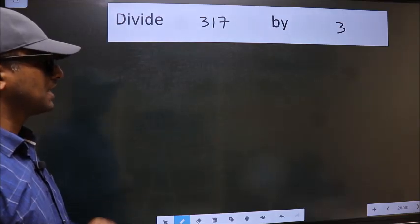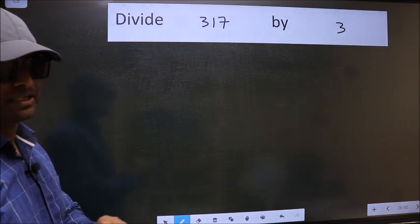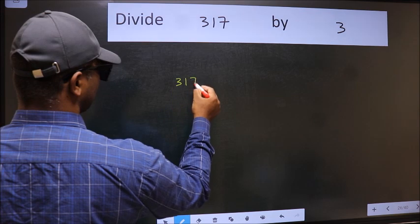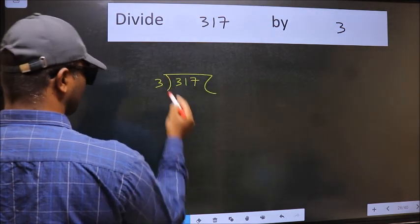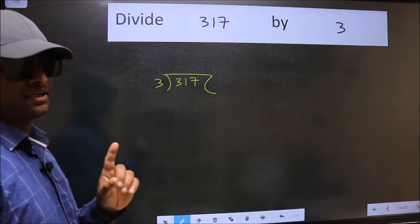Divide 317 by 3. To do this division, we should frame it in this way: 317 here, 3 here. This is your step 1.